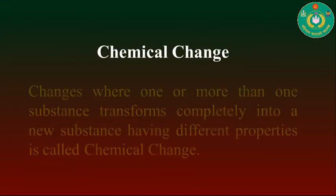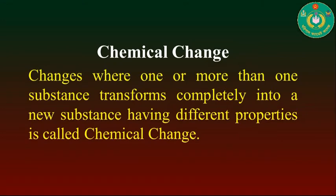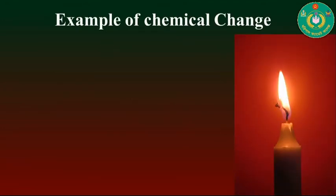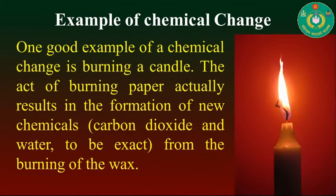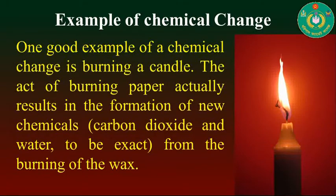A chemical change is where one or more substances transform completely into a new substance having different properties. For example, when a candle is burned, it converts into carbon dioxide and water. The carbon dioxide and water have different chemical properties from the original candle. So this change is a chemical change.